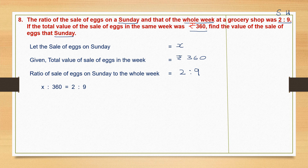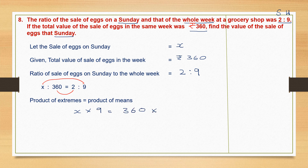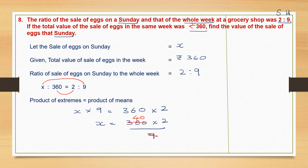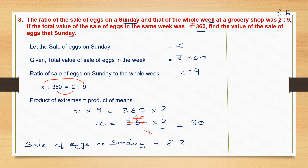For a proportion, we use the formula to find the unknown quantity x: product of extremes equals product of means. Extremes are x and 9, means are 360 and 2. So x into 9 should be equal to 360 into 2. Therefore x is 360 into 2 divided by 9. I can cancel 9 and 360 — 9 forties are 360 — so multiply 40 into 2: 4 twos are 8, add the zero, we get 80. x is equal to 80, which is the sale of x on Sunday — 80 rupees.